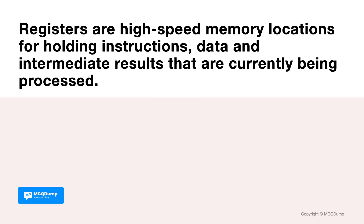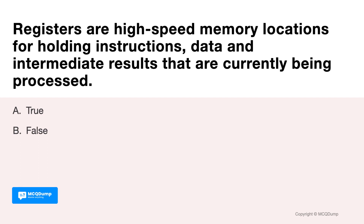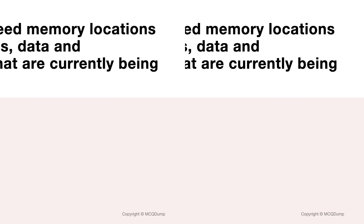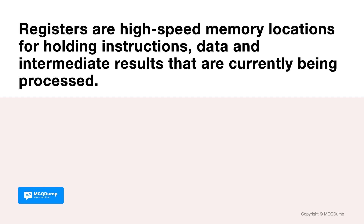Registers are high-speed memory locations for holding instructions, data, and intermediate results that are currently being processed. True or false? It is true. Registers are high-speed memory locations for holding instructions, data, and intermediate results that are currently being processed. A register is a temporary storage area inside the CPU.